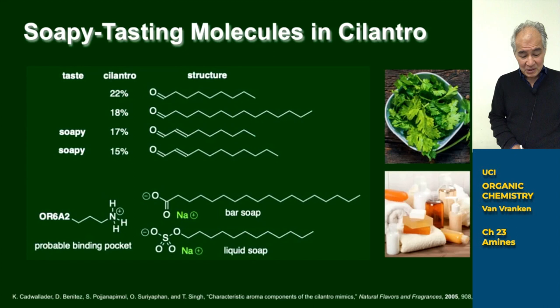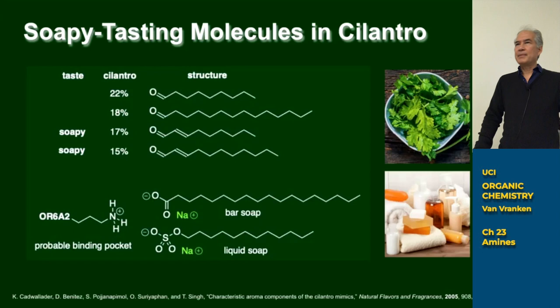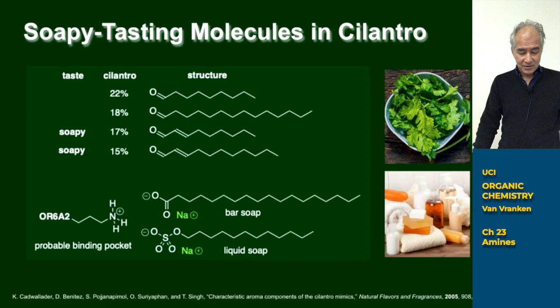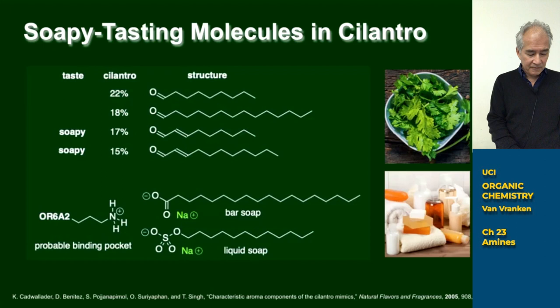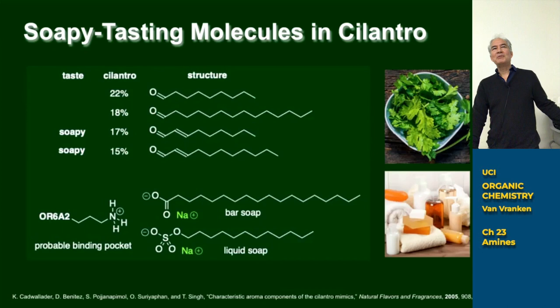I'm going to state what's kind of obvious here that nobody in this field is saying. It's probable that soap molecules of either of these types are binding in the receptor pocket. These are seven transmembrane domain G-protein coupled receptors — a common class you would have heard about in your bio classes. Probably there's an ammonium ion or a guanidinium ion in the binding site of those receptors that forms — that seems to be selective for soap-like molecules.